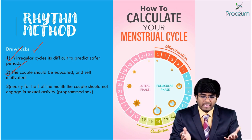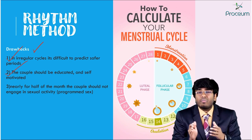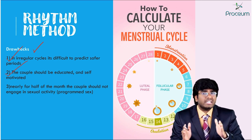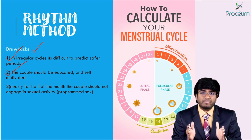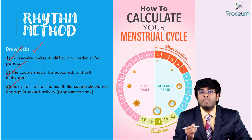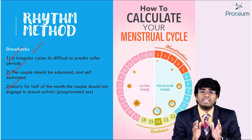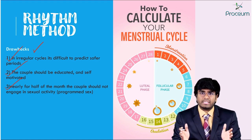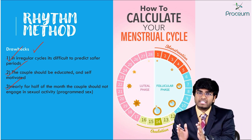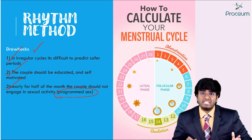Not in all females are these periods going to be the same. The safe period is not constant in all females — it may vary. Additionally, for nearly half of the month the couple is restricted from having sex, so they are having sexual activity just like a robot; it's a programmed thing. This is called programmed sex, and it is also a disadvantage.